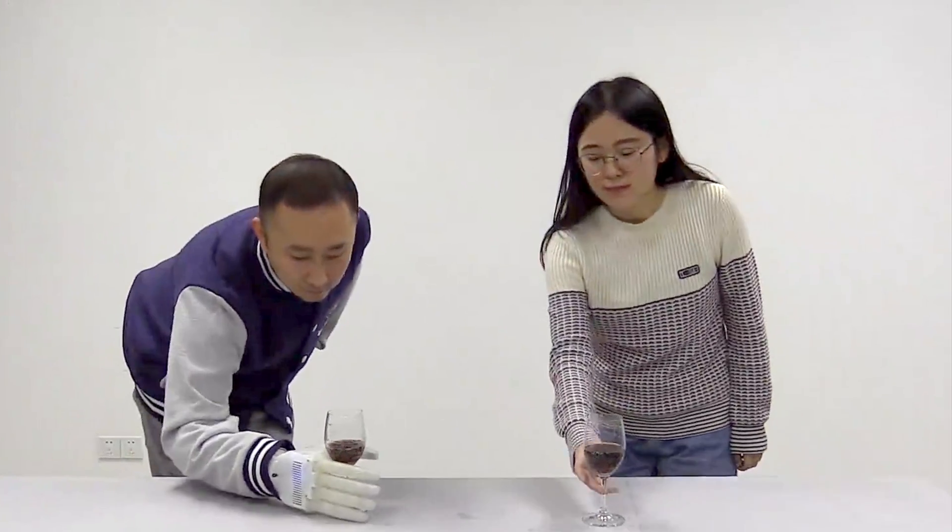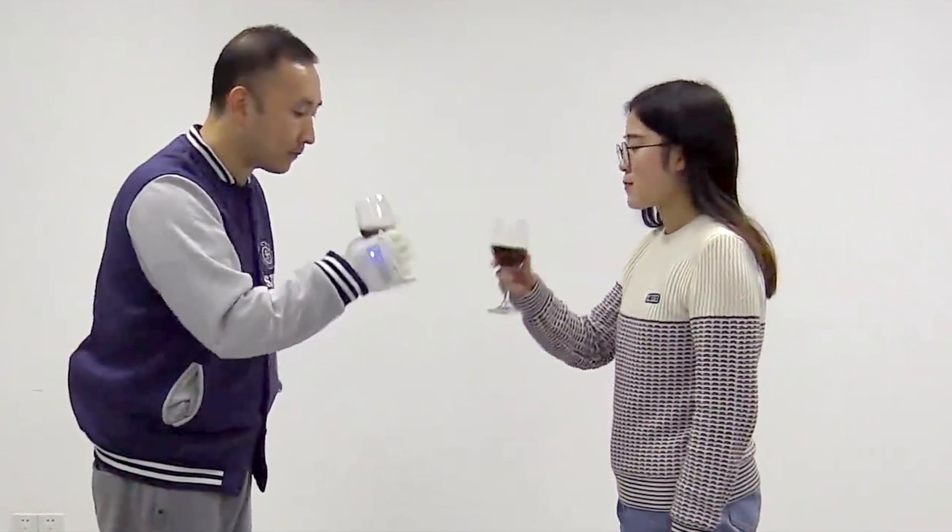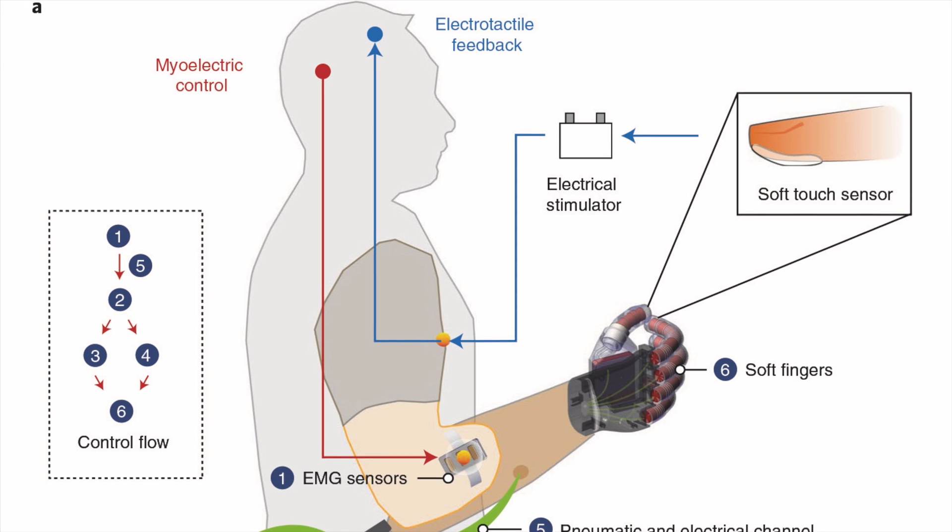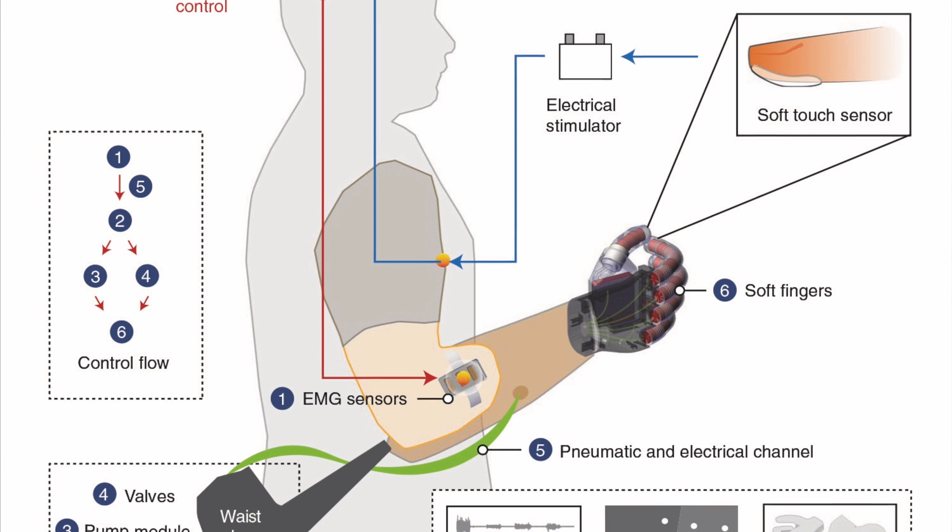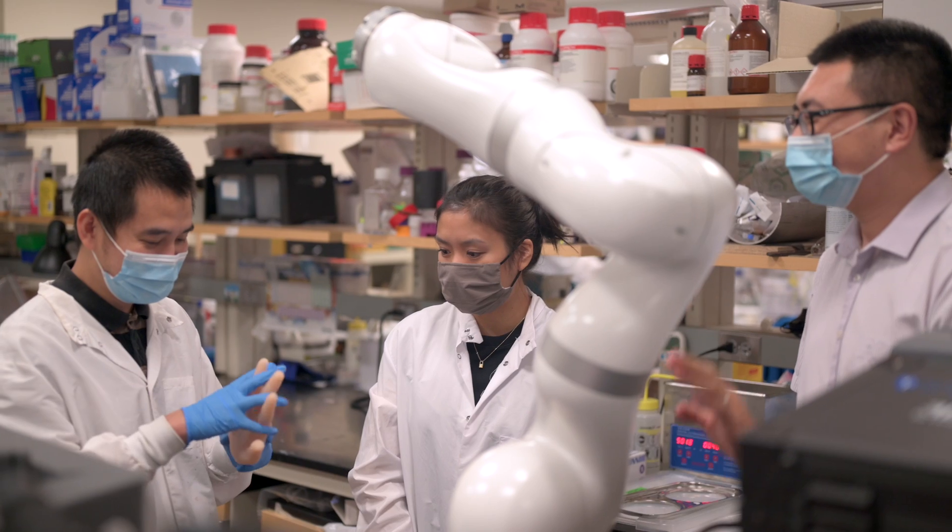For instance, when an amputee imagines holding a glass of wine, the sensors pick up the residual muscle signals, which is then translated into corresponding pressures. A pump then applies those pressures to inflate each finger and produce the amputee's intended grasp.